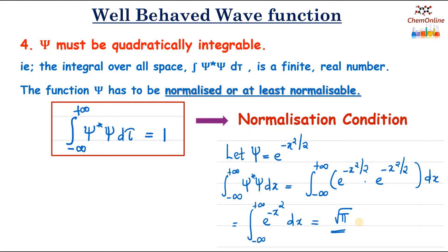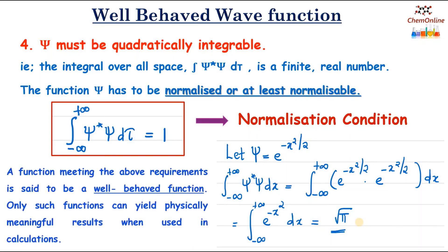And ψ must be quadratically integrable — that is, ∫ψ* · ψ dτ must be a finite real number. A function meeting these requirements is said to be a well-behaved function, and only such functions can yield physically meaningful results when used in calculations.